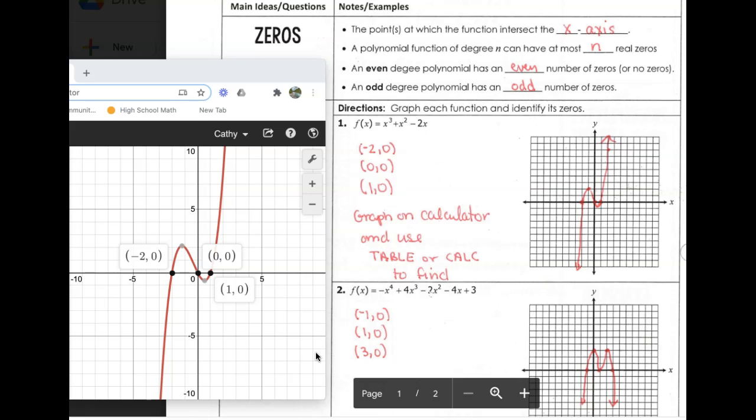So a cubic equation can have at most three real zeros. A quadratic, which is degree two, can have at most two real zeros. So an even degree polynomial has an even number of zeros or no zeros, and an odd degree polynomial has an odd number of zeros.